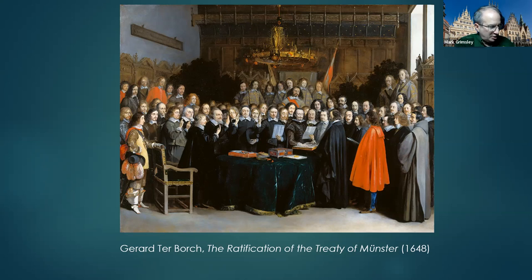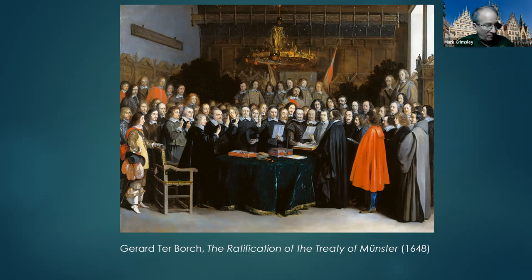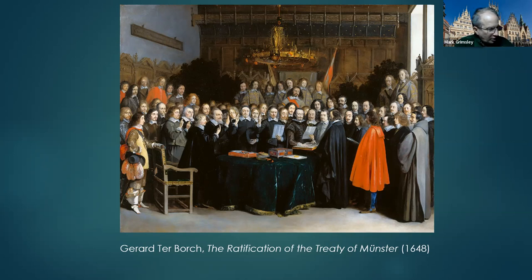The moment that it's been signed by dignitaries from Spain and the self-proclaimed Dutch Republic. This is the moment when the signature, which had been done in January 1648, is ratified in May. This treaty confirmed Dutch independence from Spanish rule and so marked the formal founding of a new nation.